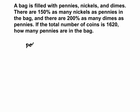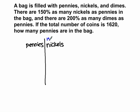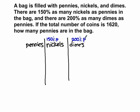So I'm going to put my pennies in. Then in the next column I'm going to make my nickels, and I'll put a little label here that the nickels are 150% of the pennies. In the last column I'm going to put my dimes, and my label for dimes is going to be 200% as many dimes as pennies — so whatever the pennies are, the dimes are 200% of the pennies. I'm going to add one more column because it also tells me the total number of coins is 1,620, so I'll write total with a label of 1,620.